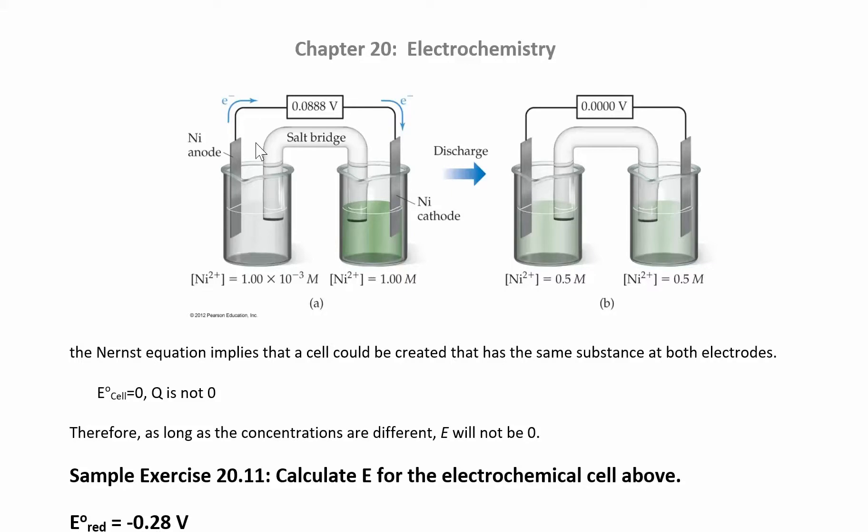An interesting application of the Nernst equation is something called the concentration cell. So in this problem you have two electrodes that are exactly the same. You have a nickel electrode over here, you have a nickel electrode over here, but the difference is that they're immersed in solutions that have different concentrations. It's the same solution, just a different concentration.